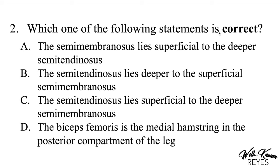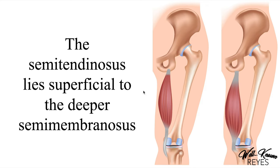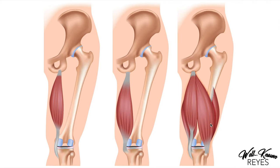Next question: which of the following statements is correct? A, the semimembranosus lies superficial to the deeper semitendinosus; B, the semitendinosus lies deeper to the superficial semimembranosus; C, the semitendinosus lies superficial to the deeper semimembranosus; or D, the biceps femoris is the medial hamstring in the posterior compartment. The correct answer is C — the semitendinosus lies superficial to the deeper semimembranosus, depicted here clearly: semitendinosus is superficial, semimembranosus is the deeper one.